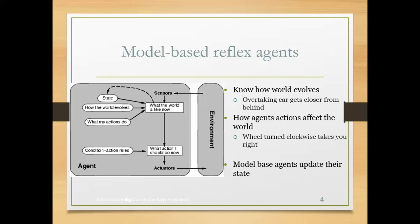Now moving to a more advanced level — model-based reflex agents. In the simple reflex model, the agent is a combination of both actuators and sensors, and it checks the present environment and performs actions accordingly. Now in the model-based reflex agent, under the environment we still have two sub-components: sensors and actuators.